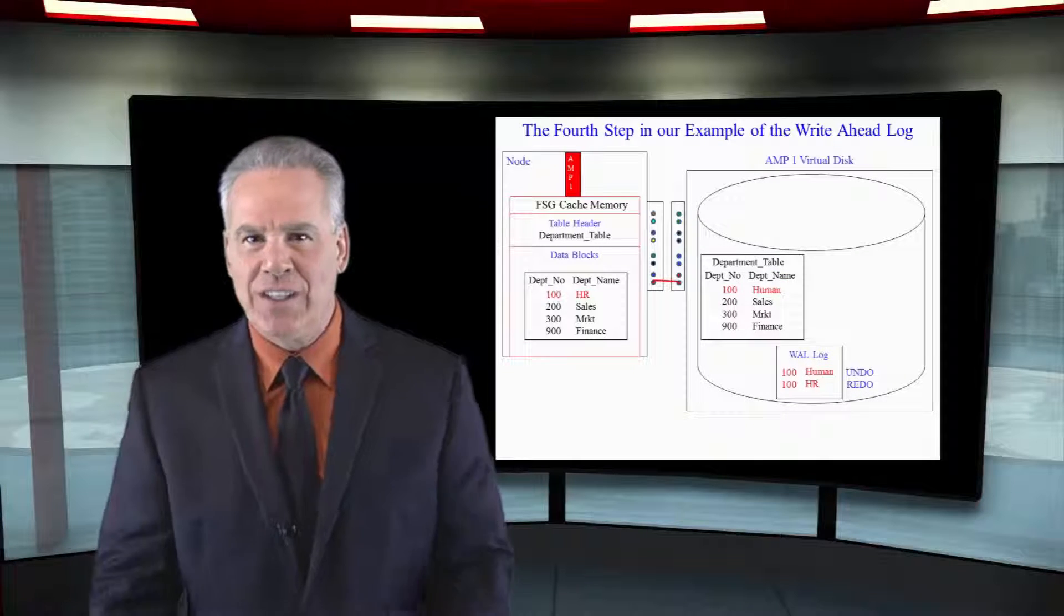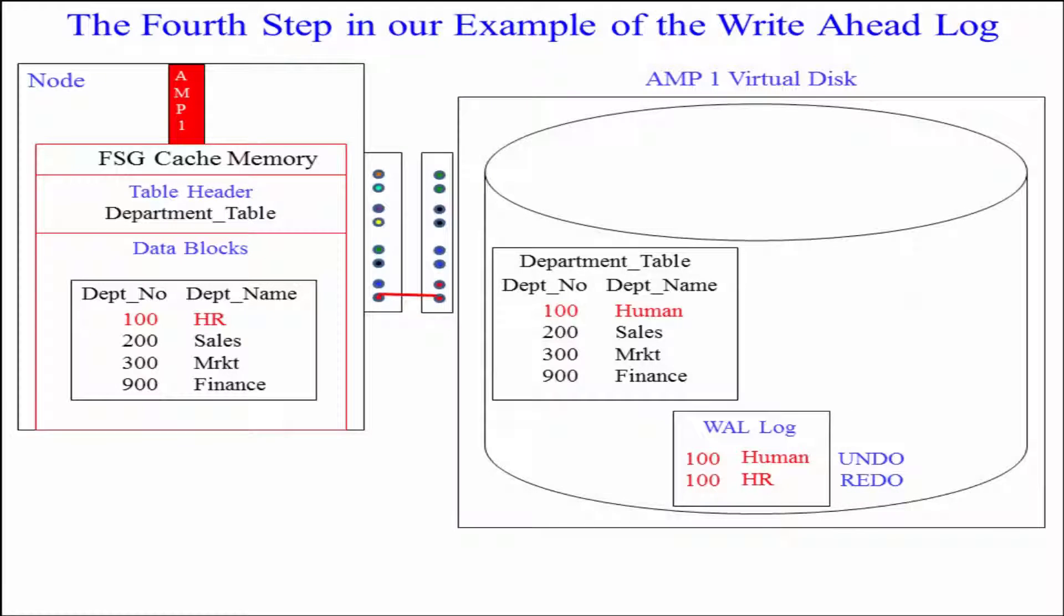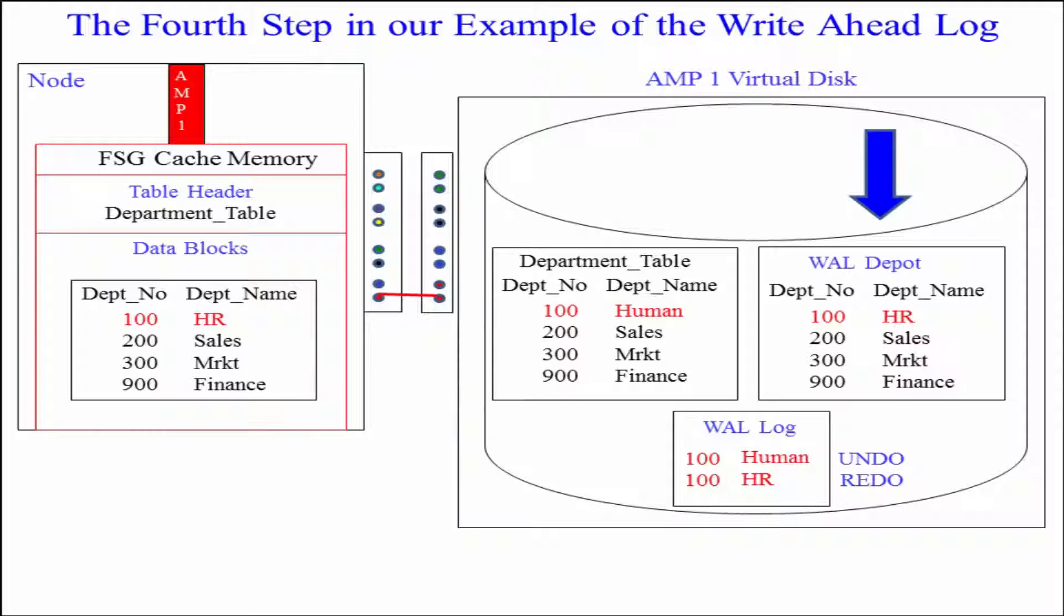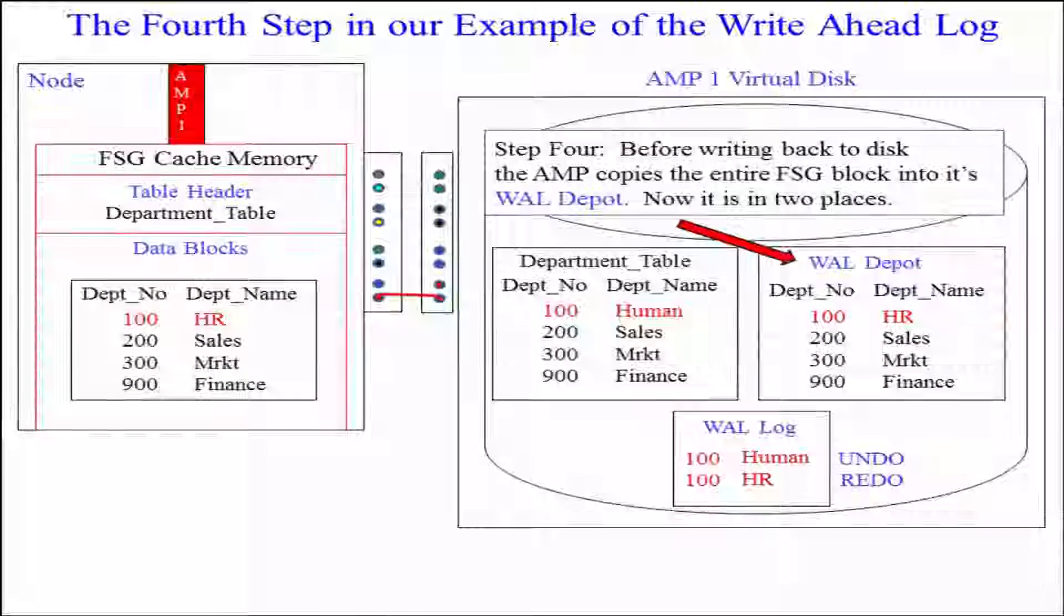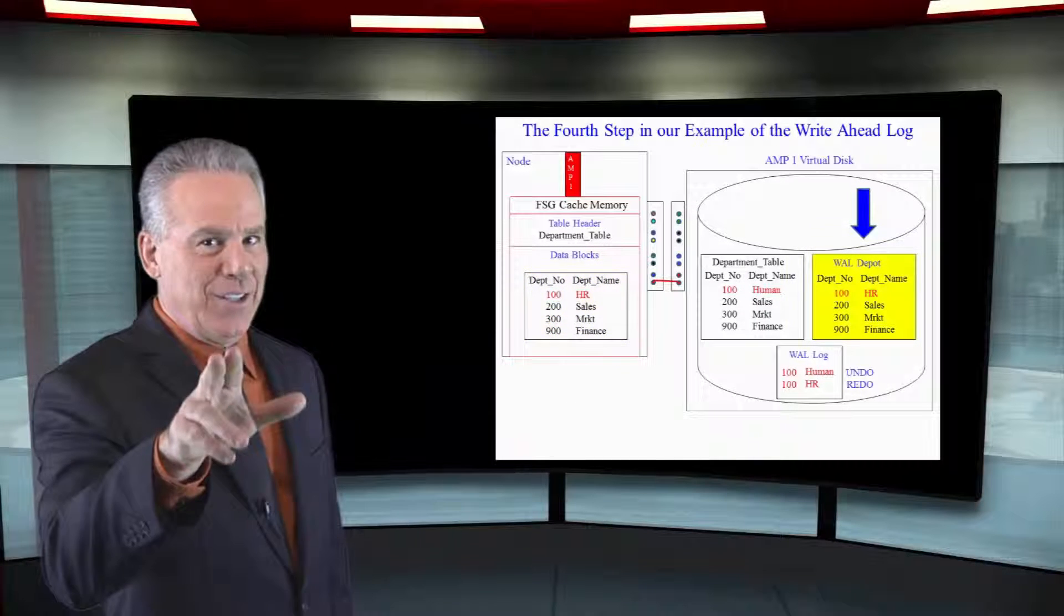Now Teradata is going to take the entire FSG cache block that's in memory and it's going to write it down to its disk in a different place called the wall depot. Now it's actually got two images of the change after it's happened so the block is identical and it's in two places.